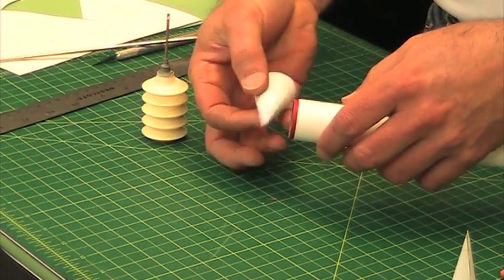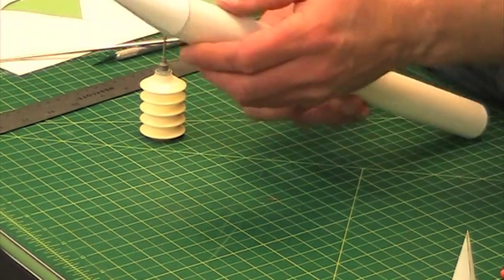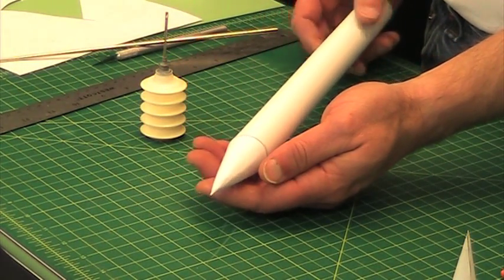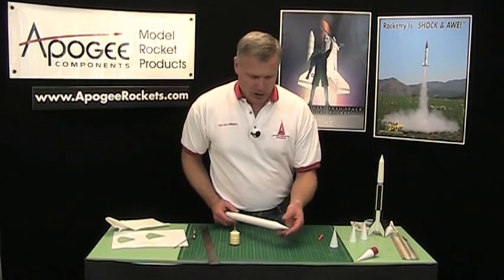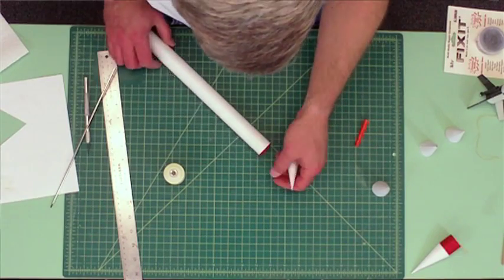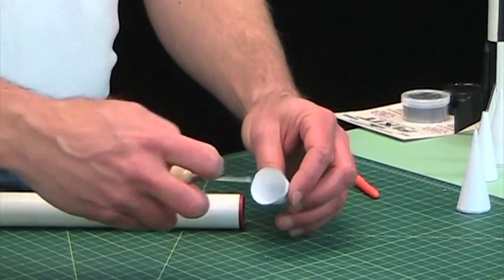So when we put it on the tube like this, and then we rotate it around, it will be nice and it will be straight. That's the ideal. So for this, put the glue on the inside of the nose cone.